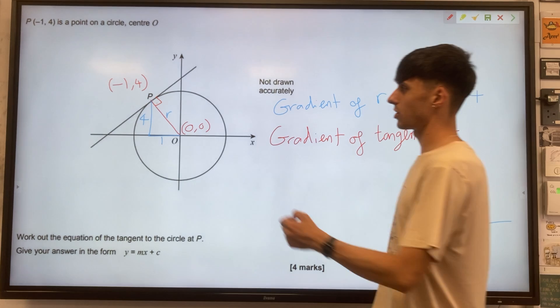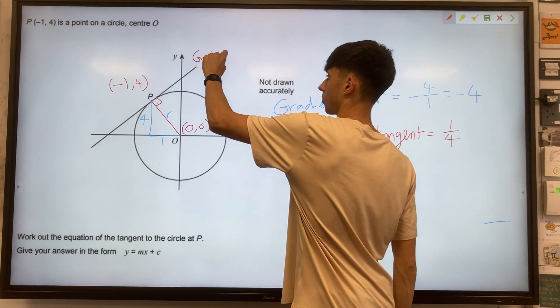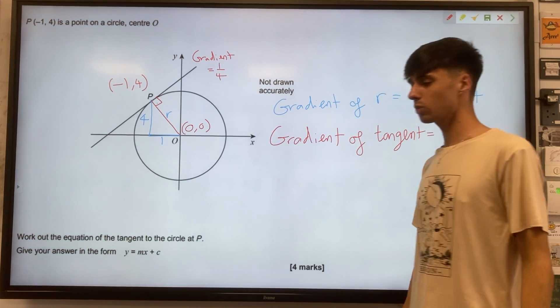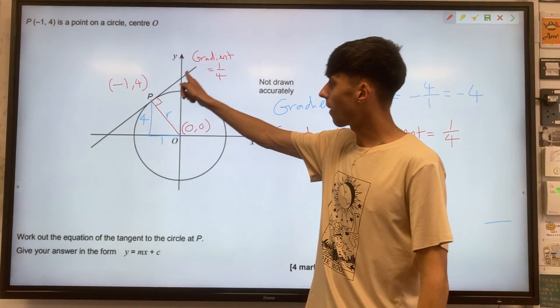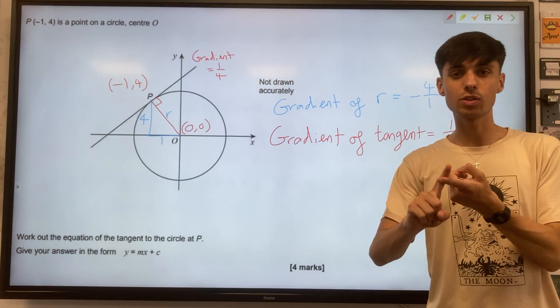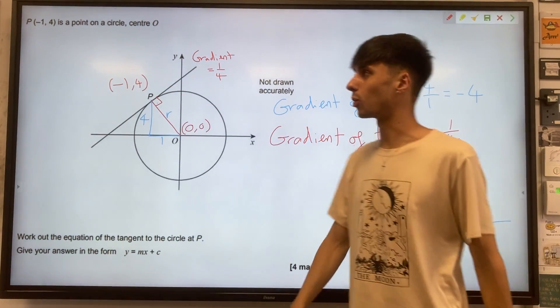I'm going to mark that on my diagram then. So let's just put gradient equals one quarter. Well, actually, now we have all the ingredients we need to find the equation of the tangent line. We have its gradient and we have a point that it goes through, namely minus 1, 4.